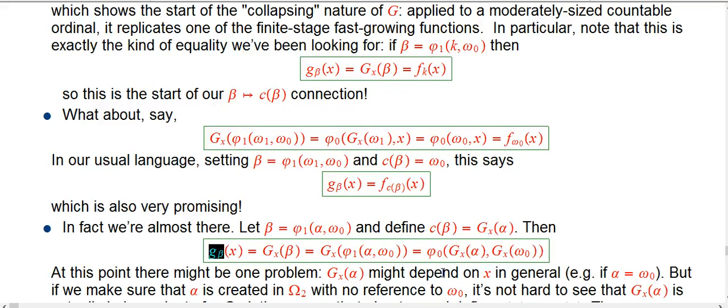And then here's what we get. g, little g, using beta on x, slow growing hierarchy. Just switch the notation. That's the same thing as using that x as a helper argument to collapse beta.